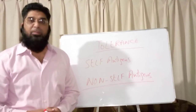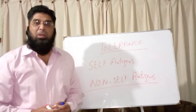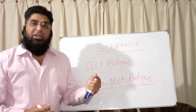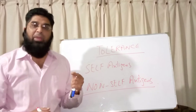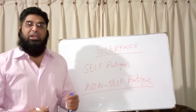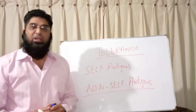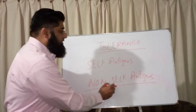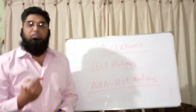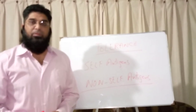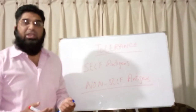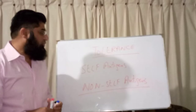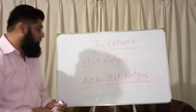Similarly, if I accept a donation of kidneys or lungs from a friend, those donated organs will be recognized as non-self-antigens by my immune system. This is the basis of transplant rejection in our body.